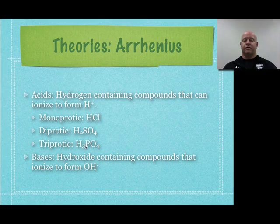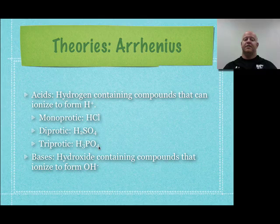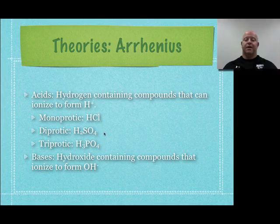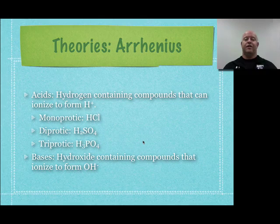For triprotic acids, you get triple the effect. So if you dissolve the same number of moles of hydrochloric, sulfuric, and phosphoric acid, you would have three times the concentration of acid from phosphoric acid versus hydrochloric. That's assuming they all dissolve and split apart 100%. We're going to find out in this unit that that doesn't always happen — sometimes they're weak electrolytes and don't fully split apart, so we have to factor that into our equilibrium calculations.